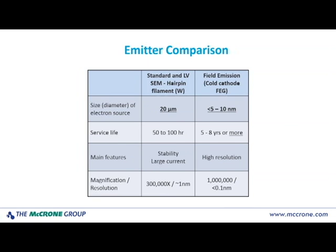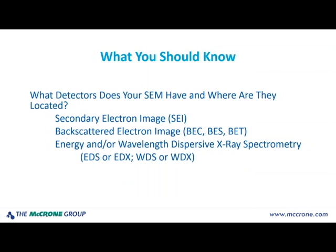If you go to the field emission, they have the capability of going to a million x. This takes a lot of effort to get to. You have to have a room that is well protected with no electromagnetic emissions anywhere near the instrument; otherwise, it will distort your image. But you can achieve resolutions of less than a tenth of a nanometer — down into the angstrom range.